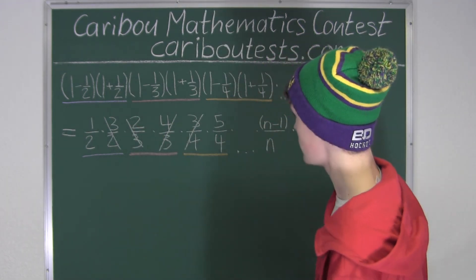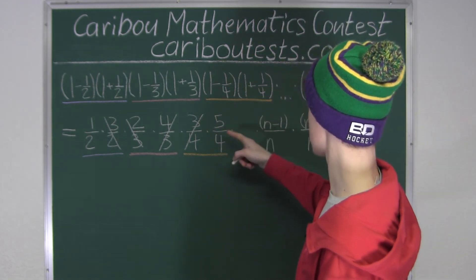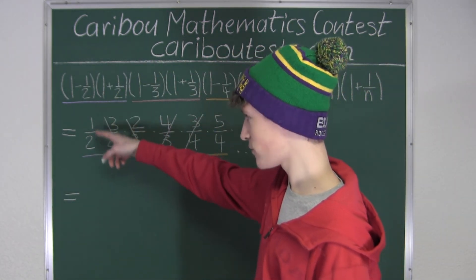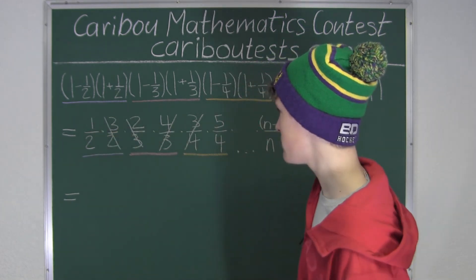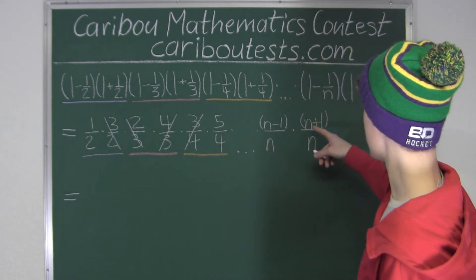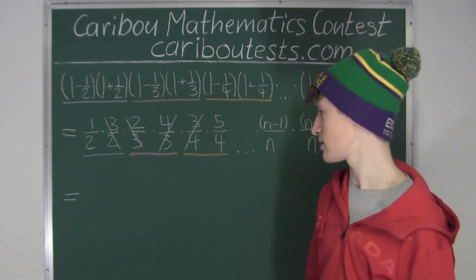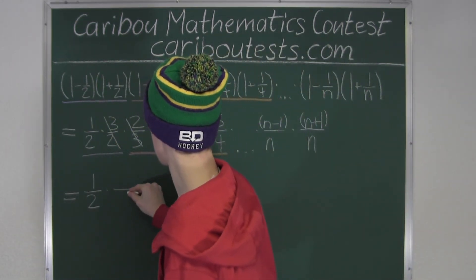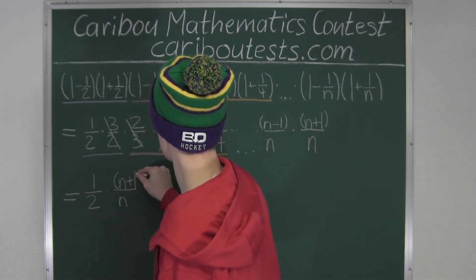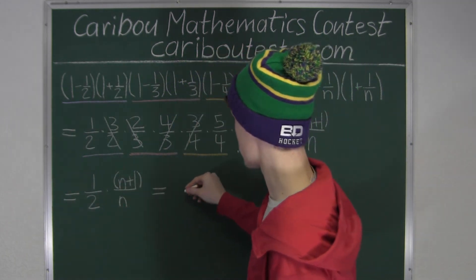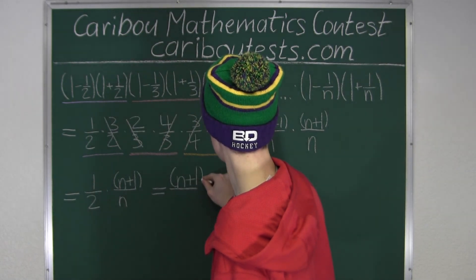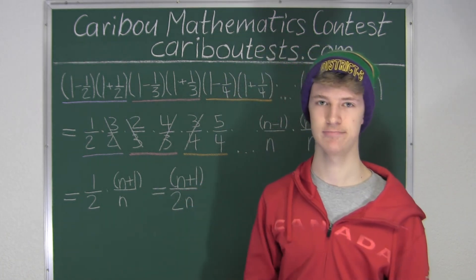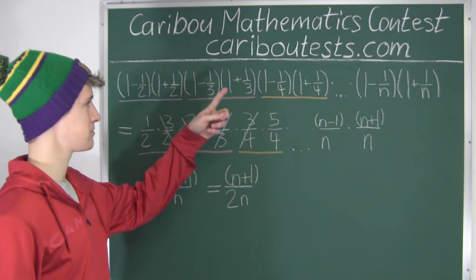This cancellation keeps happening, so all the middle terms cancel out. What we're left with is just the first factor, which is 1 over 2 — because it has no left neighbor — and the very last factor, which is n plus 1 over n, because that has no right neighbor to cancel with. So we are left with 1 over 2 times n plus 1 over n, which gives us n plus 1 over 2n. If you looked at the options, you would see that is option D. If you'd like to know more about this contest, please visit our website at cariboutests.com.